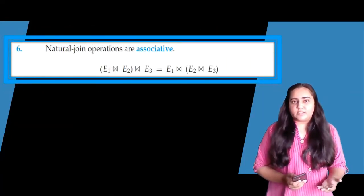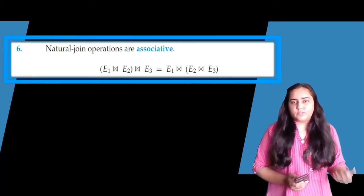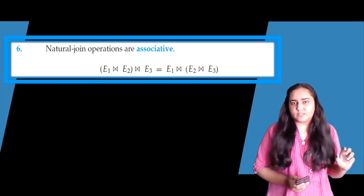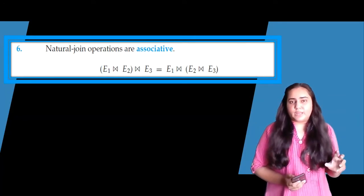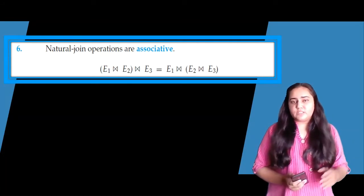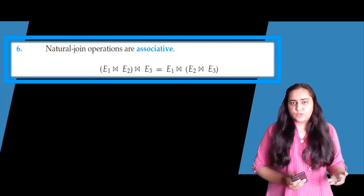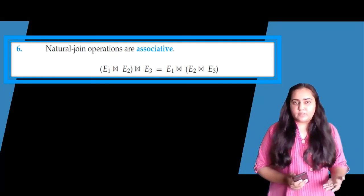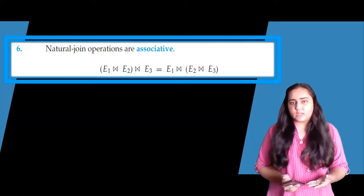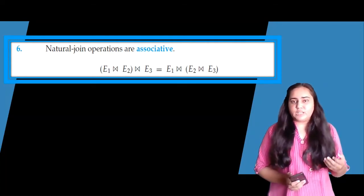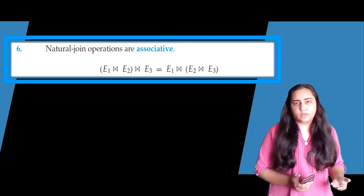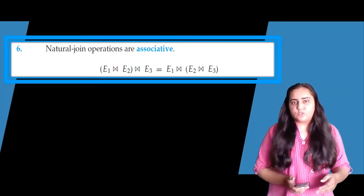The sixth rule says that natural join operations are associative. Associativity deals with the placement of brackets — which operation is performed first based on the braces around them. On the left-hand side, E1 natural-joined with E2 is then natural-joined with E3. On the right-hand side, E2 is first natural-joined with E3, and then E1 is natural-joined with that result — hence natural joins are associative.